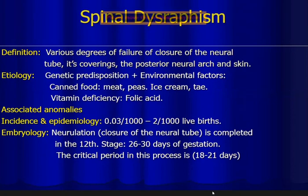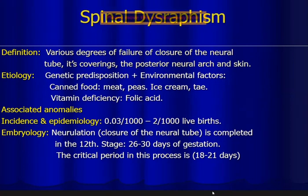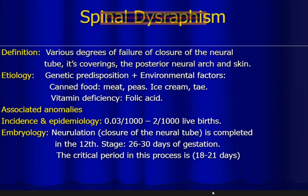Spinal dysraphism can be associated with other congenital anomalies of the cardiovascular system or other CNS anomalies like hydrocephalus. The incidence is about 0.03 to 2 per 1,000 live births. Embryologically, closure of the neural tube is completed at the 12th stage, that is day 26 to 30 of gestation. The critical period is day 18 to 21, when spinal dysraphism can develop.